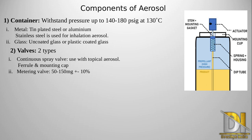The valve is of two types: the first is continuous spray valve, and the second is metering valve. Continuous spray valve is used with topical aerosol. Metering valve is mainly used to accurately deliver a fixed amount of drug, with a range generally from 50 to 150 mg plus or minus 10%.